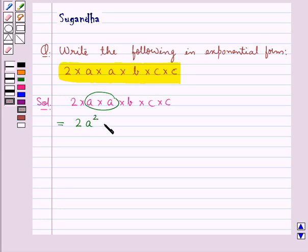So it would be A to the power 2 into B, since we have only 1 B, and since we have 2 C's, it would be C to the power 2.